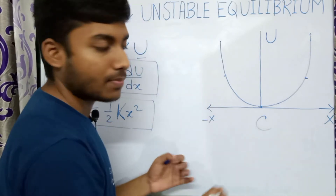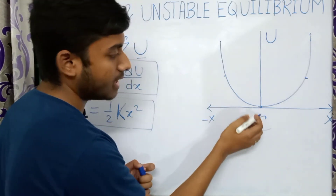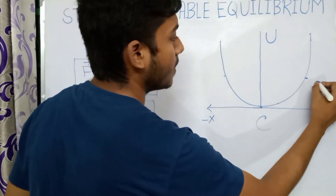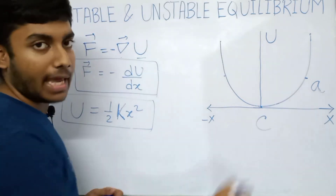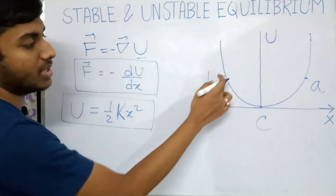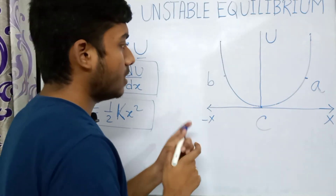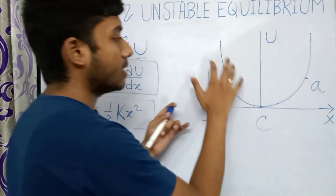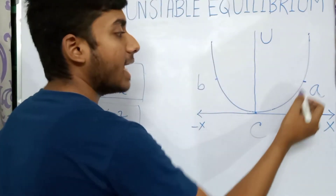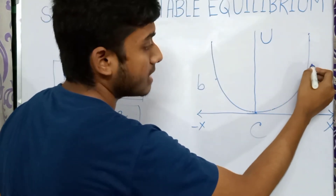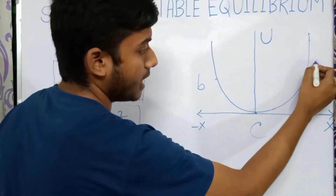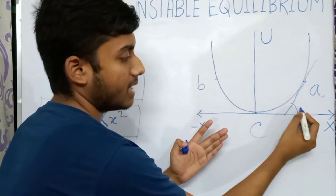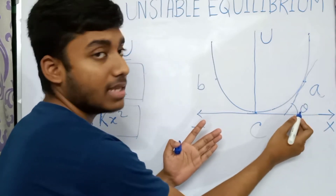We are taking three points: number one is C, that is the origin of the parabola; number two is a point rightward, suppose A; and a point leftward, suppose B. Now we will understand some concepts relating to these three points. For point A, you can easily see that the tangent to this curve at point A makes an angle theta which is less than 90 degrees.